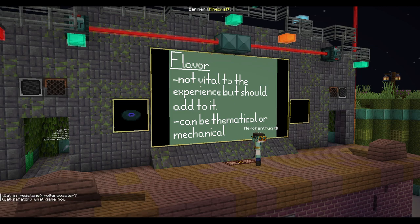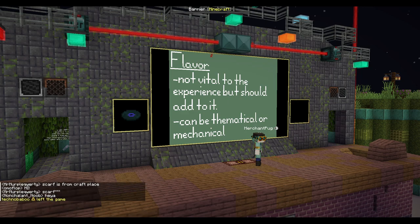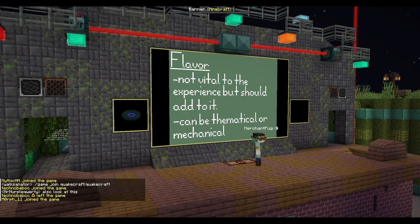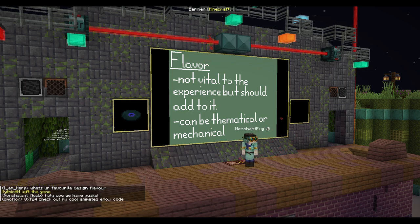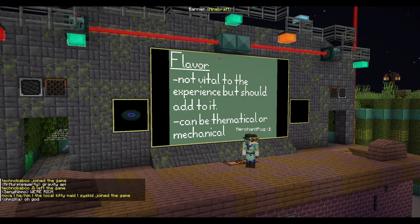For example, you might conclude that applying knockback to a target with this mace is not a good fit for the weapon, because the weapon focuses on being up close to your enemies. However, something like being able to bash melons and pumpkins would not hurt the goal. Flavor can help, but don't do too much of it.